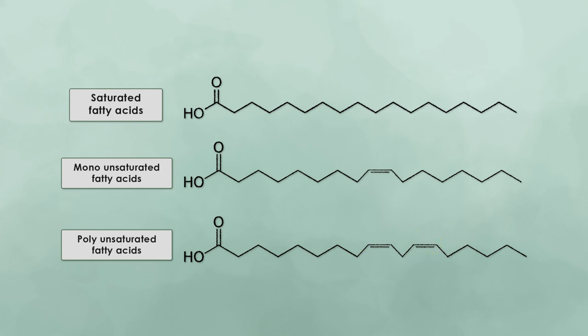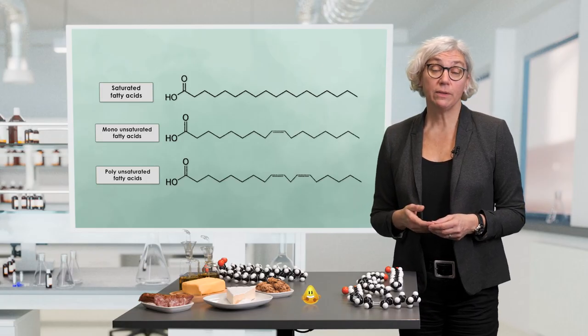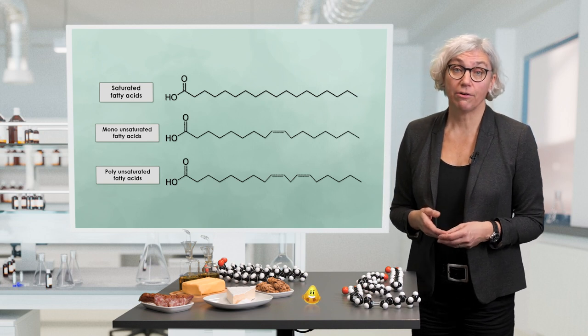Each double bond that is found in the carbon chain has impact on the geometric structure of the fatty acid. And as a consequence, the properties of the fats and lipids are impacted.